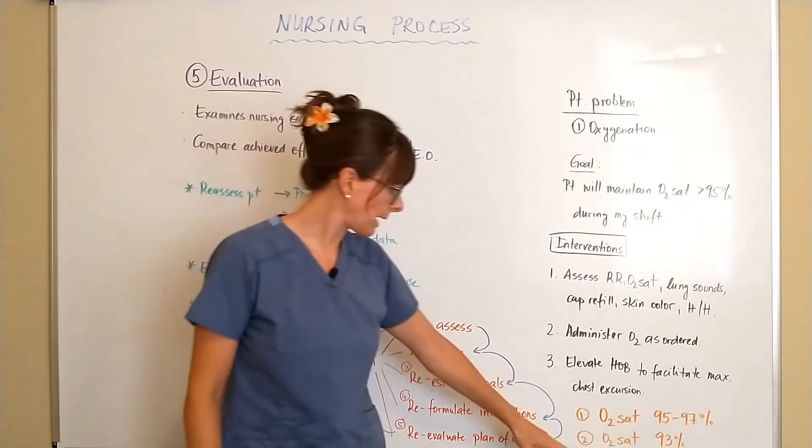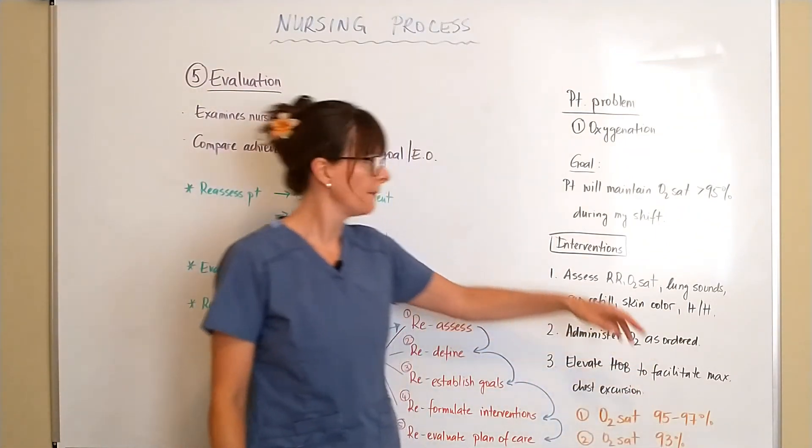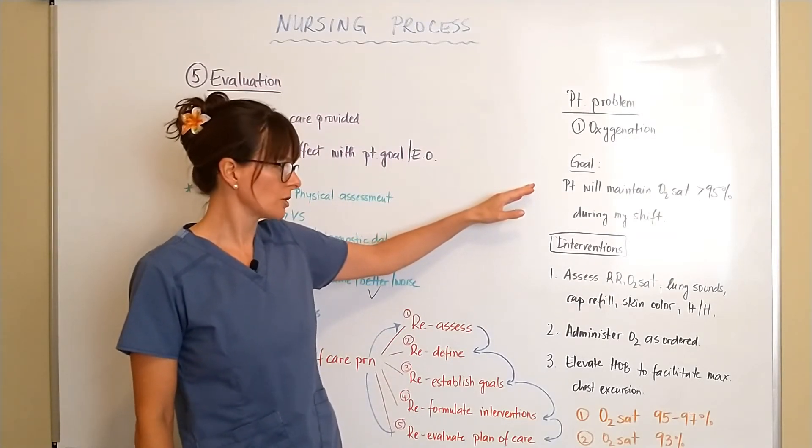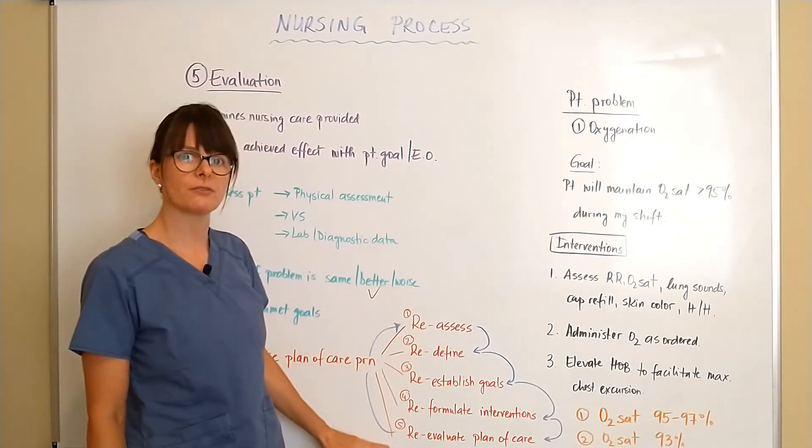However scenario number two if we come back here and the O2 sat now has been 93 percent that means we haven't met our goal of greater than 95 percent during the shift so now we have to go back and reassess the patient and go through all the different steps.